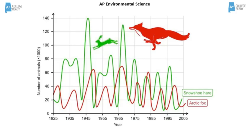An interesting general relationship exists between predator and prey populations as shown in this graph. The predator is the arctic fox and its prey is the snowshoe hare. Notice how the number of animals, which represents the population size, changes between predator and prey. If there is a decrease in prey numbers, there will be a decrease in predator numbers. If the prey population increases, the predator population increases. And generally, the prey population is larger than the predator population.